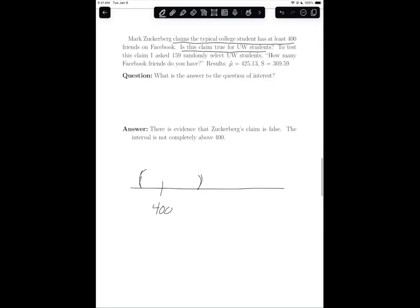And so I don't have evidence that it's strictly more than 400. For it to be strictly more than 400, I'd have the 400 here and my interval would be somewhere completely above it. So do I have evidence that it's above? No. Do I have evidence that it's below? No. I don't know whether it's more or less than 400 because 400 is inside the interval.